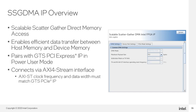DMAs, or Direct Memory Access, are commonly used to enable efficient data transfer between host memory and device memory. For older FPGA families, we introduced the Scatter-Gather DMA, or SGDMA. We now introduce the Scalable Scatter-Gather DMA, or SSGDMA IP. This IP works when paired with the GTS PCI Express Intel FPGA IP in power user mode and connects via the AXI 4 stream interface, but only when the clock frequency and data widths are matched.